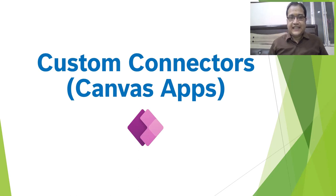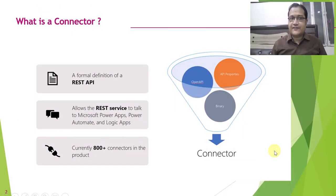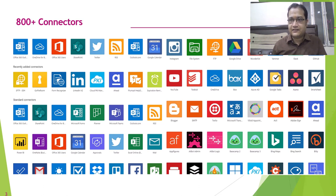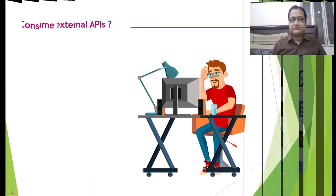In this video I will talk about what custom connectors are and how you can create custom connectors in PowerApps and Power Automate. First of all, what is a connector? A connector is a formal definition of a REST API — it allows a REST service to talk to Microsoft PowerApps, Power Automate, and Logic Apps. Many connectors are currently available, called standard connectors, which allow you to connect to third-party systems. There are around 800 plus standard connectors currently available.